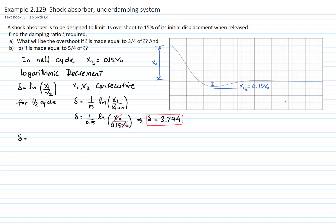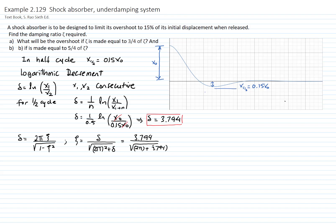The logarithmic decrement δ equals 2π·ζ divided by the square root of 1 minus ζ squared. If we solve for ζ, we have the logarithmic decrement divided by the square root of (2π)² plus the logarithmic decrement squared. Plugging in the numbers, that is 3.794 divided by the square root of (2π)² plus 3.794², giving a value of ζ equals 0.5164. As you can see, that value is less than 1, confirming it is an underdamped system.